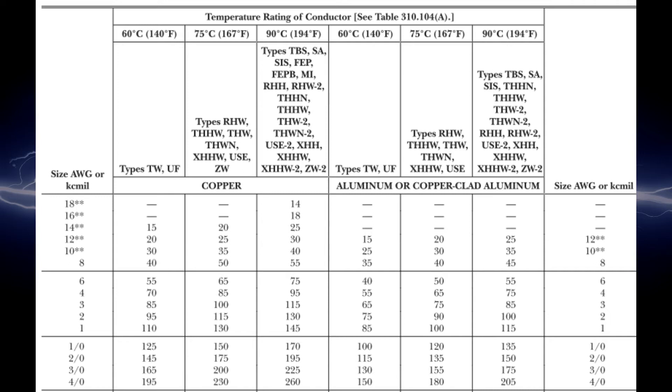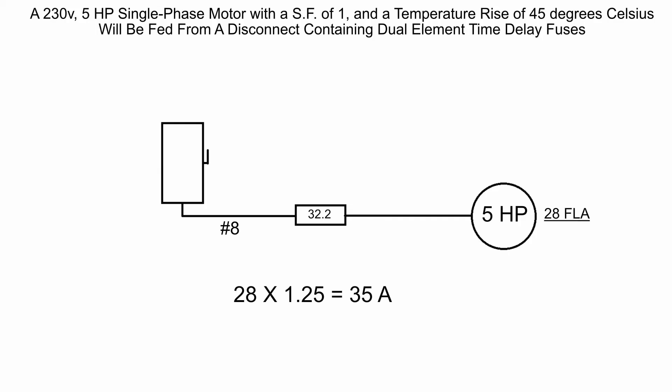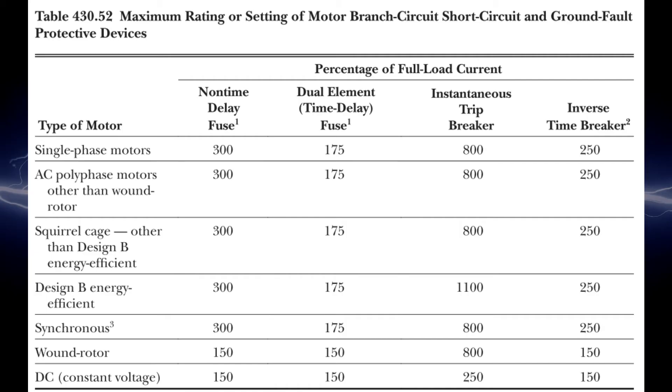The final phase in this problem is to solve the overcurrent protective device. Again, there's more information that's very important. We were told that the disconnect will contain dual element time delay fuses. To size this overcurrent for the motor we will go over to Table 430.52. This is for all of your motor sizing for the short circuit and ground fault protective devices.